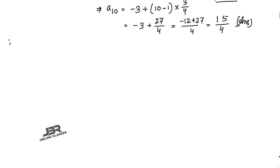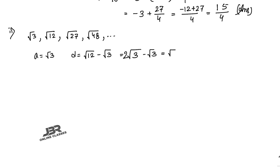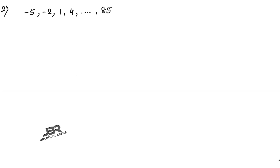Next sequence: √3, √12, √27, √48, ... Here a = √3. The common difference d = √12 − √3 = 2√3 − √3 = √3. To find the 10th term: a_10 = √3 + 9 × √3 = 10√3. So the answer is 10√3.